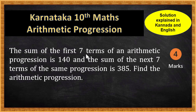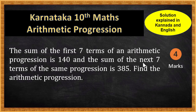Sum of first 7 terms of an arithmetic progression is 140. They have given us the sum of the first 7 terms. Sum of next 7 terms of the same progression is 385.